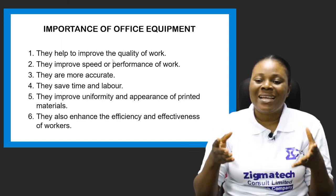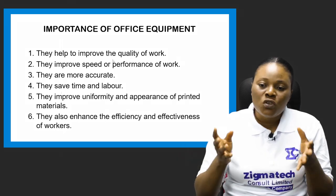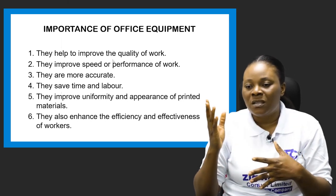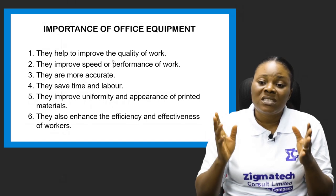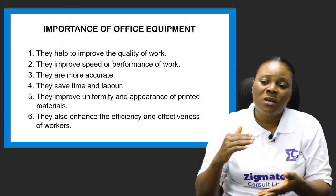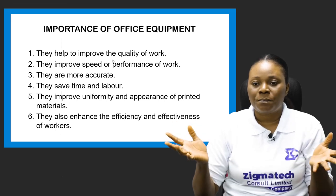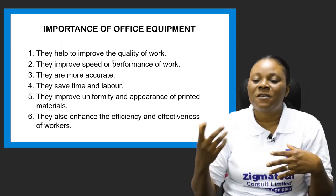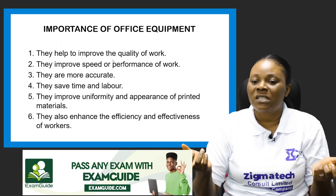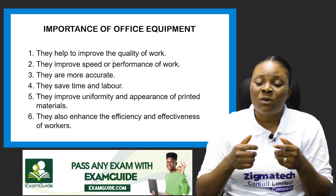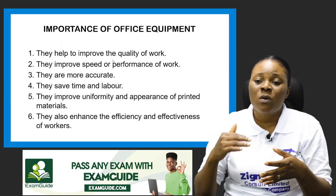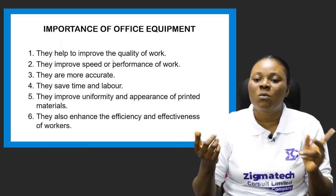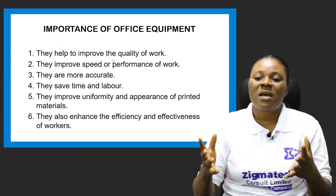The fifth importance is that office equipment improves uniformity and appearance of printed materials. For example, if a task is given to about 10 students to type on a computer with the same font style and font size, at the end of everybody's work it's going to be uniform. Similarly, if we are all given an arithmetic like 50 plus 70, using a calculator or computer we are all going to get uniform answers, but using just mental ability you may get different answers from different people.